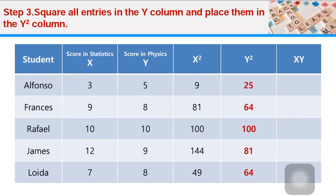Let's have step three. You square all the entries in the Y column and place them in the Y squared column. For example, five squared is 25, eight squared is 64, 10 squared is 100.